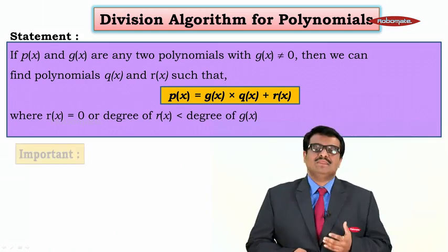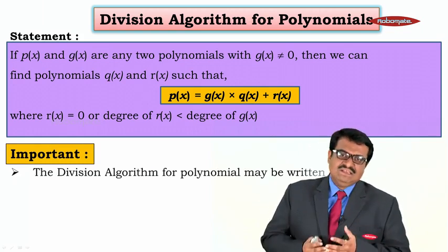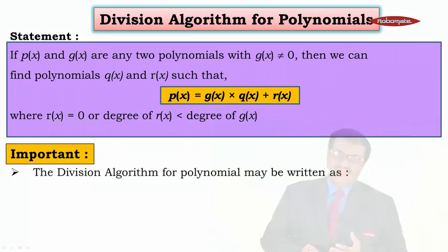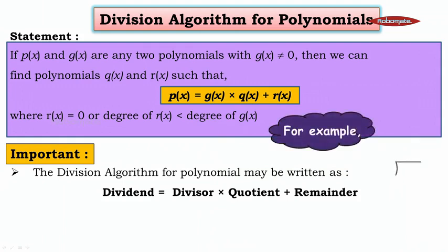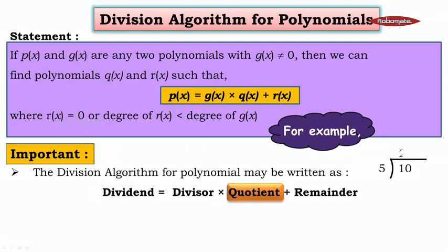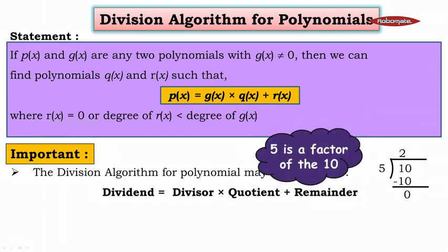Let us understand this properly. The division algorithm for polynomials may be written as: dividend = divisor × quotient + remainder. For example, let us do a division where the dividend is 10 and the divisor is 5. When you divide 10 by 5, the quotient is 2 because 5 twos are 10, and the remainder will be 0. Whenever the remainder is 0, we say 5 is a factor of 10.